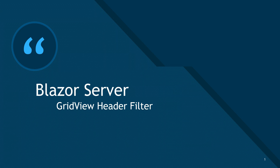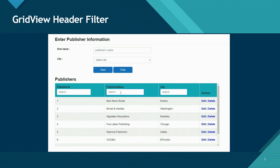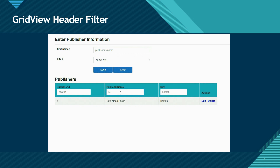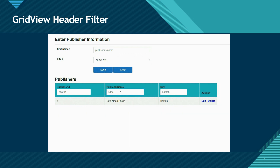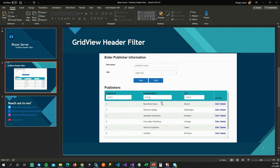In this video I'm going to talk about how you can add filters in your grid view header. In the last couple of videos I talked about templated components for consistent UI across your application, event callbacks to control parent events from a child component, and event handling for keypress and key down events on a text box. We're going to use all of these concepts to add filters on our grid view.